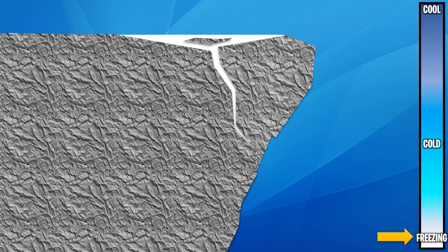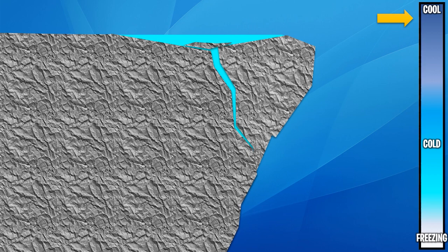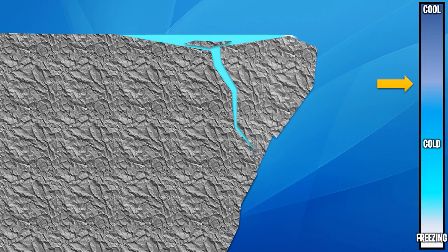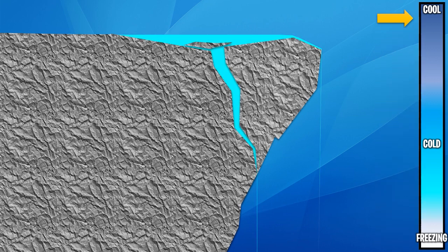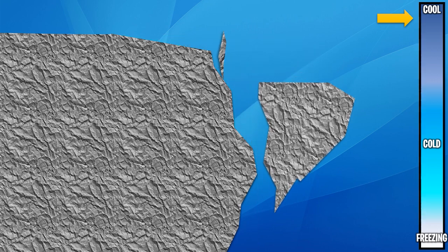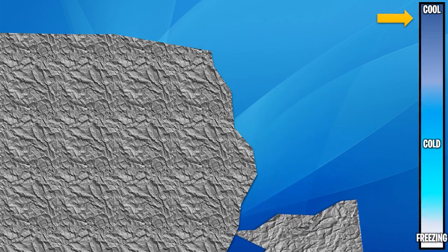We call it freeze-thaw weathering because it goes from freezing back to cool, and then it starts to freeze again — another wedge, expanding even further. As it begins to cool again, there's very little holding that piece up, so eventually it just gives way and falls.